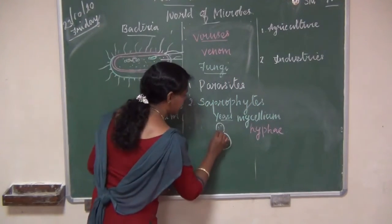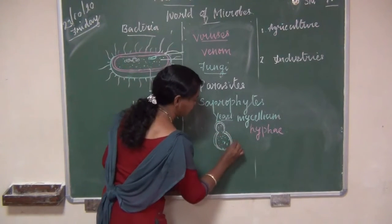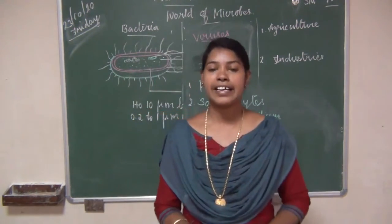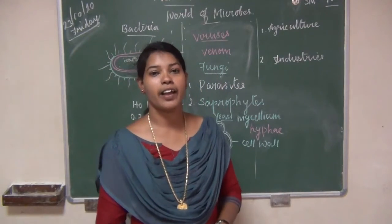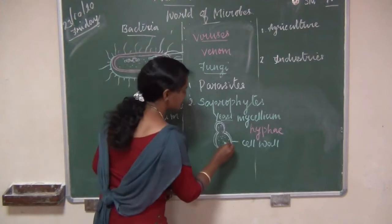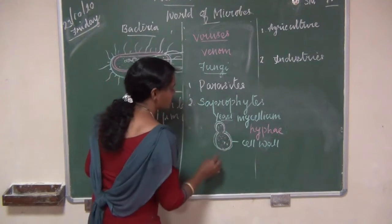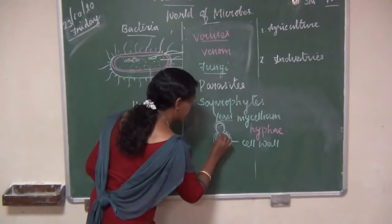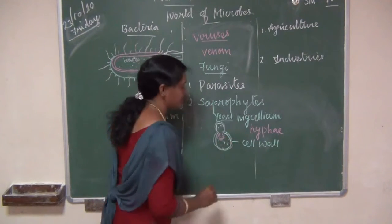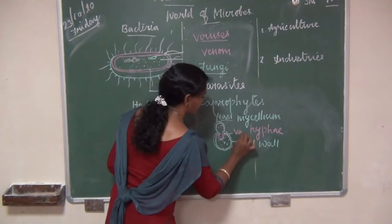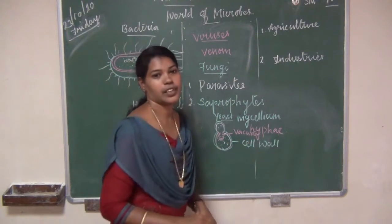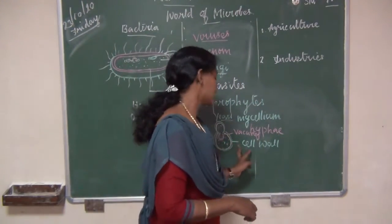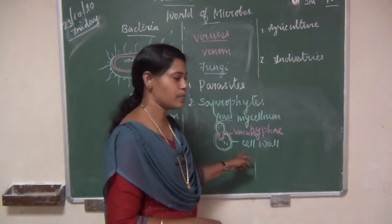Fungi are covered by a cell wall. The cell wall is made up of chitin or cellulose. Inside the cell wall, a small vacuole is present that is filled with cell sap.